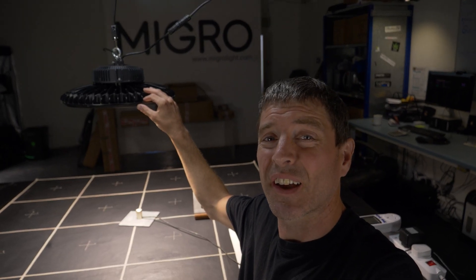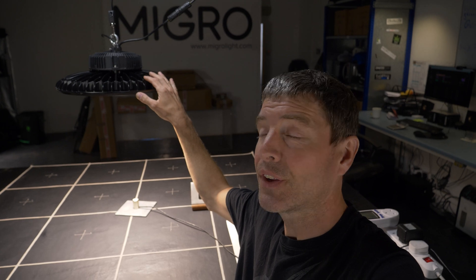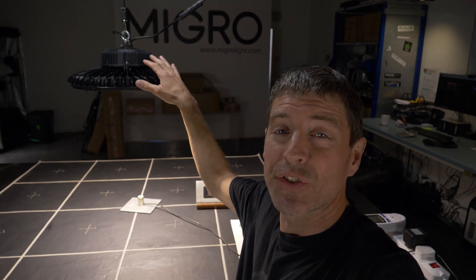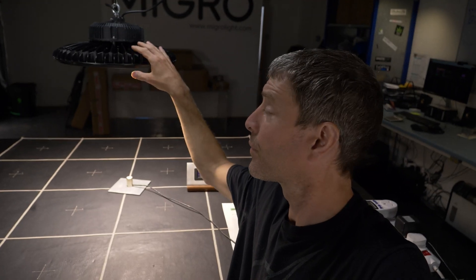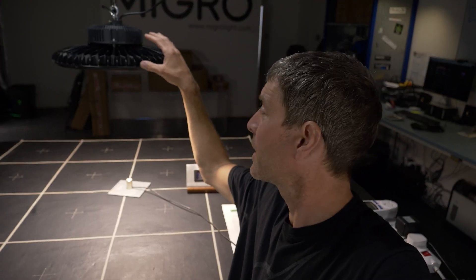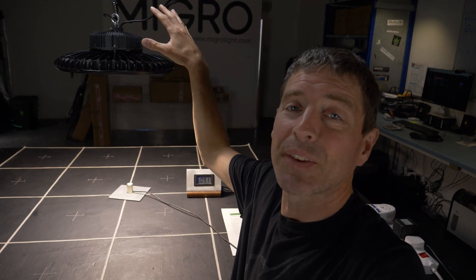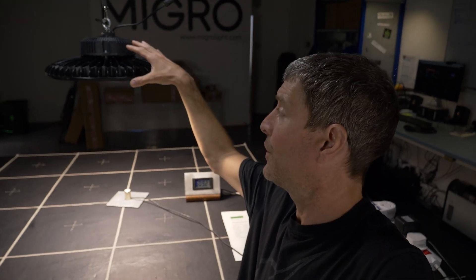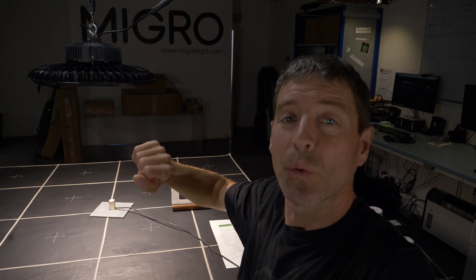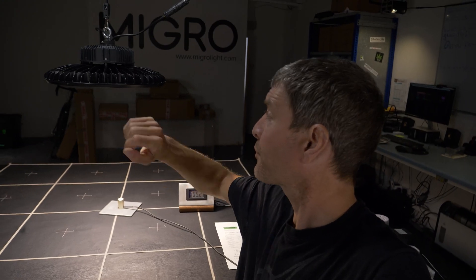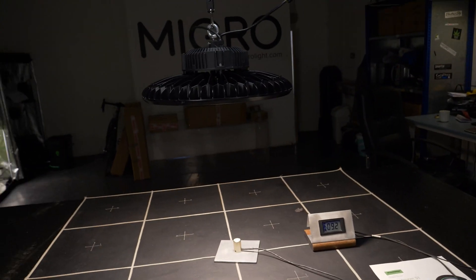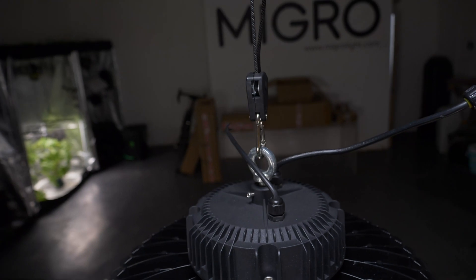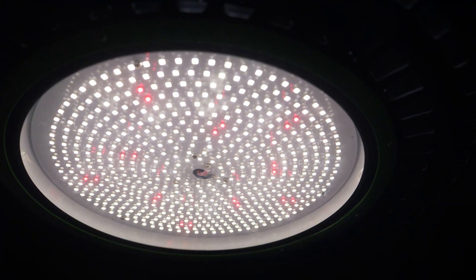It's typically called a high bay light, so called because they're usually fitted in warehouses, factories, maybe big supermarkets, that kind of thing. They're big single light, high wattage. This guy's 250 watts coming out of one light, driver mounted on the back, single central hanging point here, just an eye bolt and a big circular light source down below.